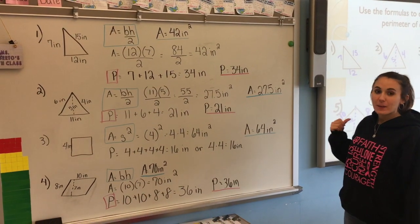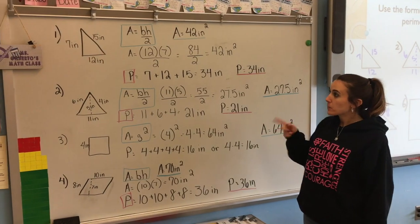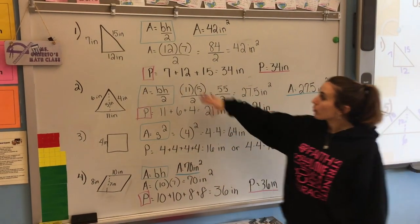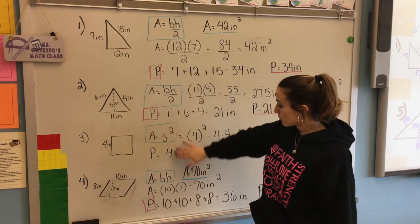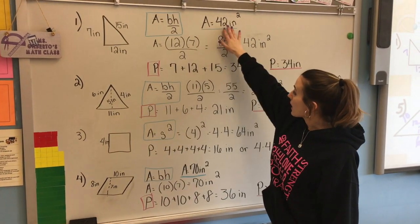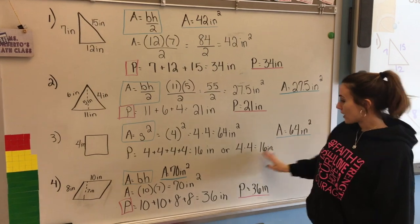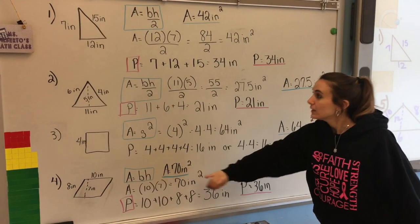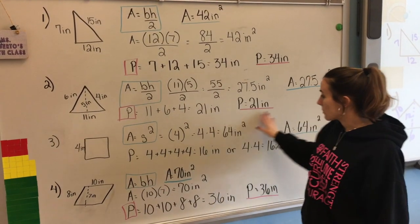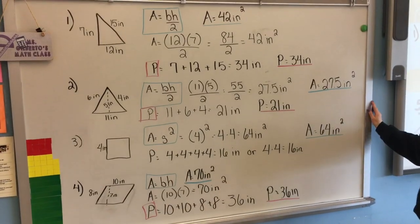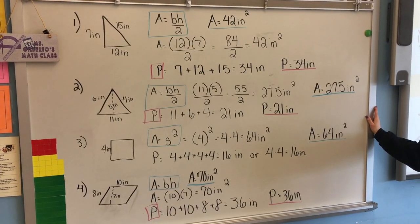So here is your answer key for your independent practice numbers one through four. Take a quick notice how the blue represents your area. So the blue boxes are all the formulas that you should have used and the underline are all of the areas that you should have gotten. And then we have pink here for perimeter and the final answers for perimeter as well. Please pause your video now so you can review your answers and your work.